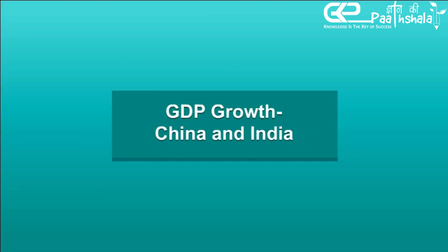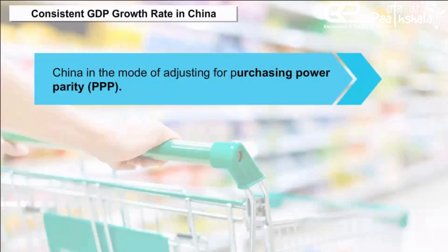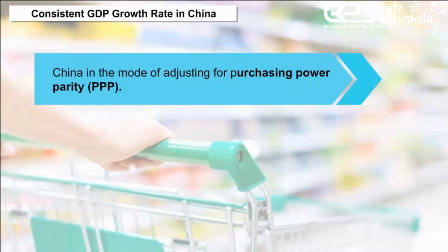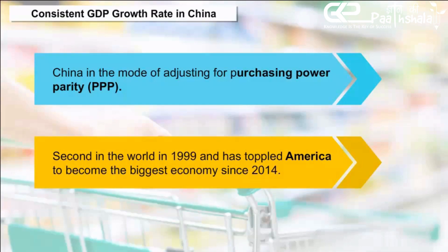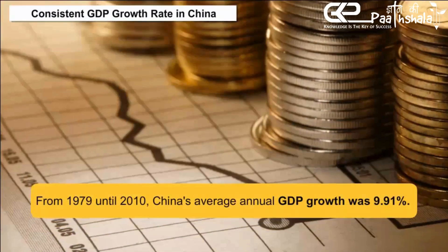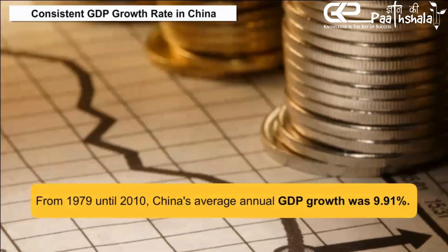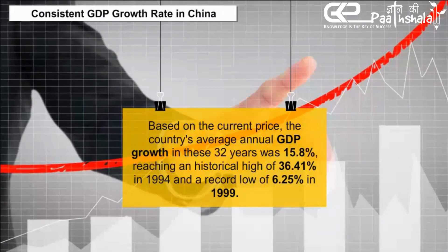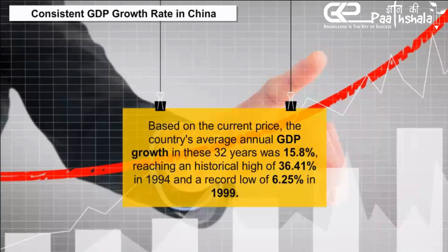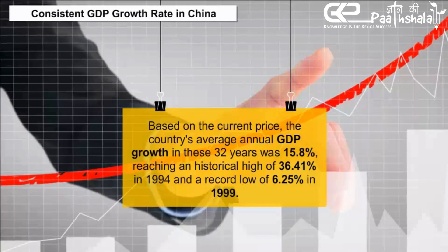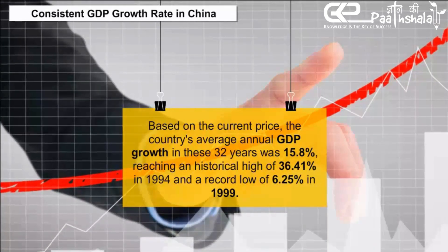GDP Growth — China and India. Consistent GDP Growth Rate in China. China, adjusted for purchasing power parity (PPP), became second in the world in 1999 and has toppled America to become the biggest economy since 2014. From 1979 until 2010, China's average annual GDP growth was 9.91%. Based on current prices, the average annual GDP growth in these 32 years was 15.8%, reaching a historical high of 36.41% in 1994 and a record low of 6.25% in 1999.